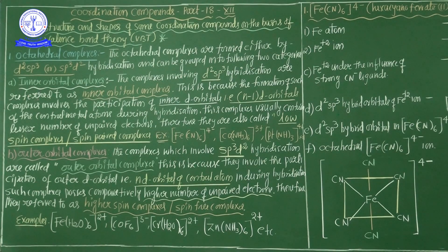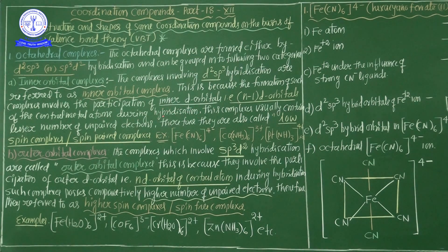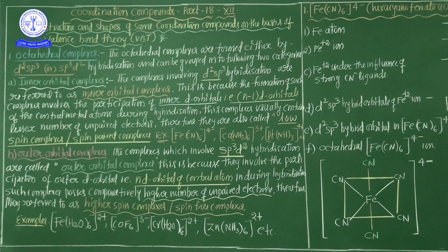In inner orbital complexes, the (n-1)D orbitals of the central metal atom are involved during hybridization. These complexes usually contain a lesser number of unpaired electrons. Therefore, they are also called low spin complexes or spin-paired complexes.